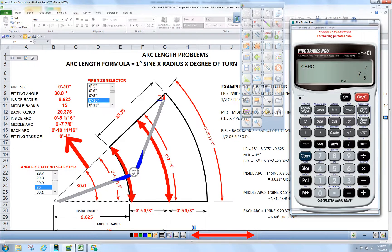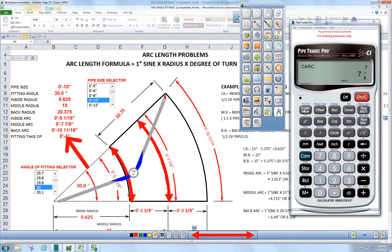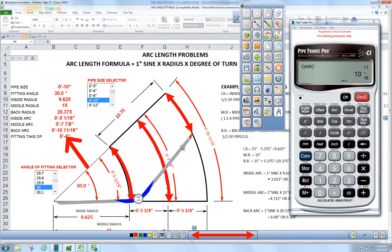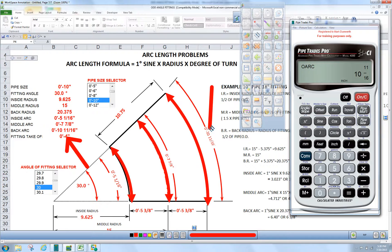And we press angle slope again. That again is the back arc. Very easily done. Very user friendly. And you get confirmation of the back arc at 10 and 11/16.